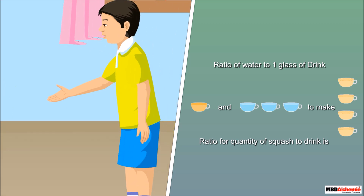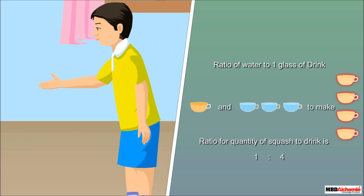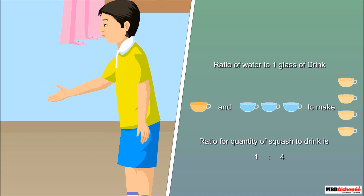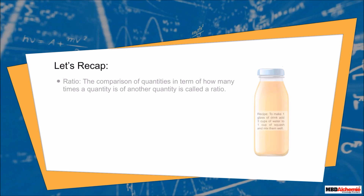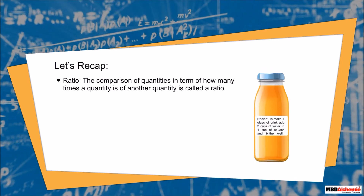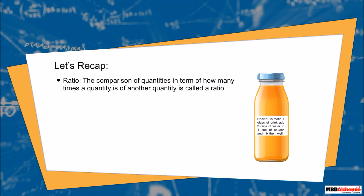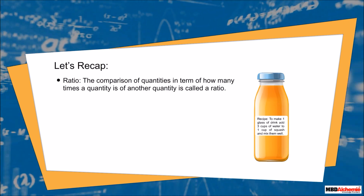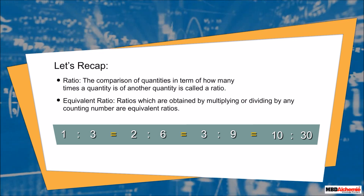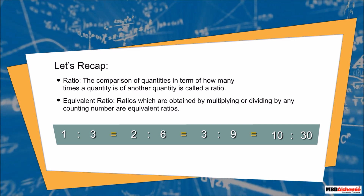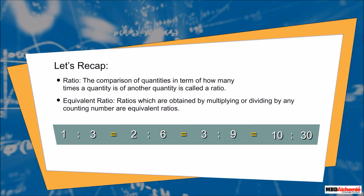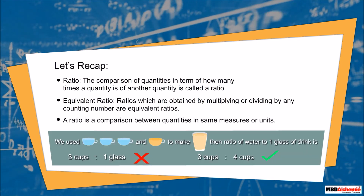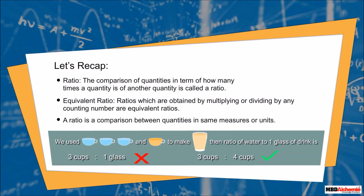The ratio of squash to drink is one is to four. While writing ratios, first convert different quantities into the same unit. Recap — Ratio: the comparison of quantities in terms of how many times one quantity is of another is called a ratio. Equivalent ratio: ratios obtained by multiplying or dividing by any counting number. A ratio compares quantities in the same measures or units.